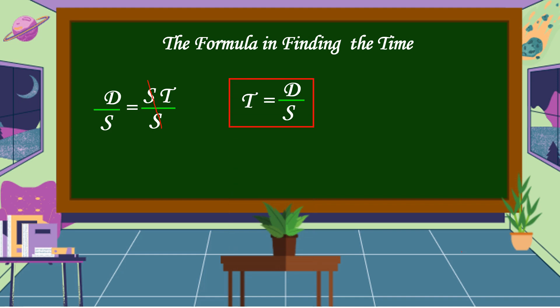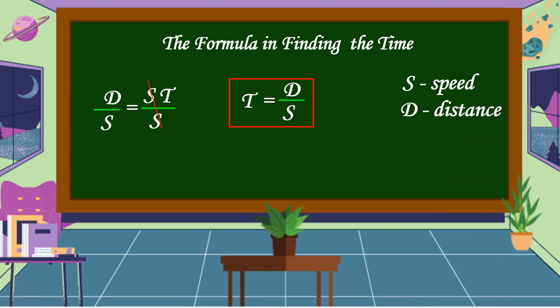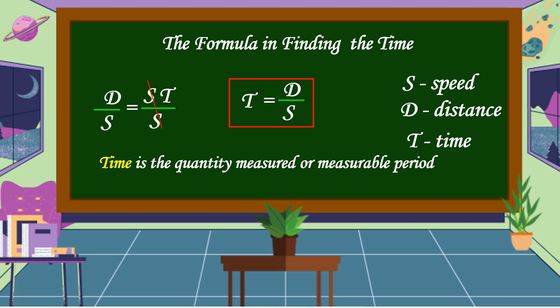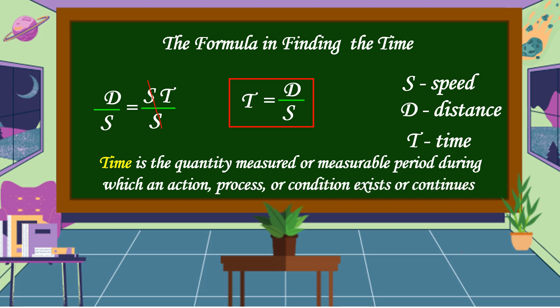This is the formula for finding time, where S is the speed, D is the distance, and T is the time. Time is the quantity, measured or measurable period during which an action, process, or condition exists or continues.